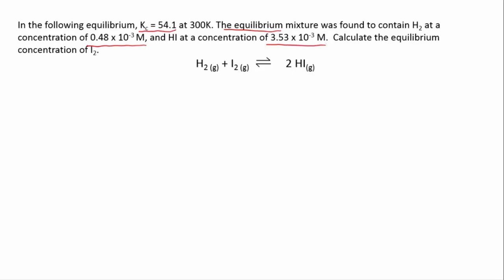So again your first step should be to write down the equilibrium expression. Now all we have to do, we know Kc or Keq, we know the concentration of hydrogen, we know the concentration of hydrogen iodide, we just have to substitute in and rearrange to get the concentration of iodine.